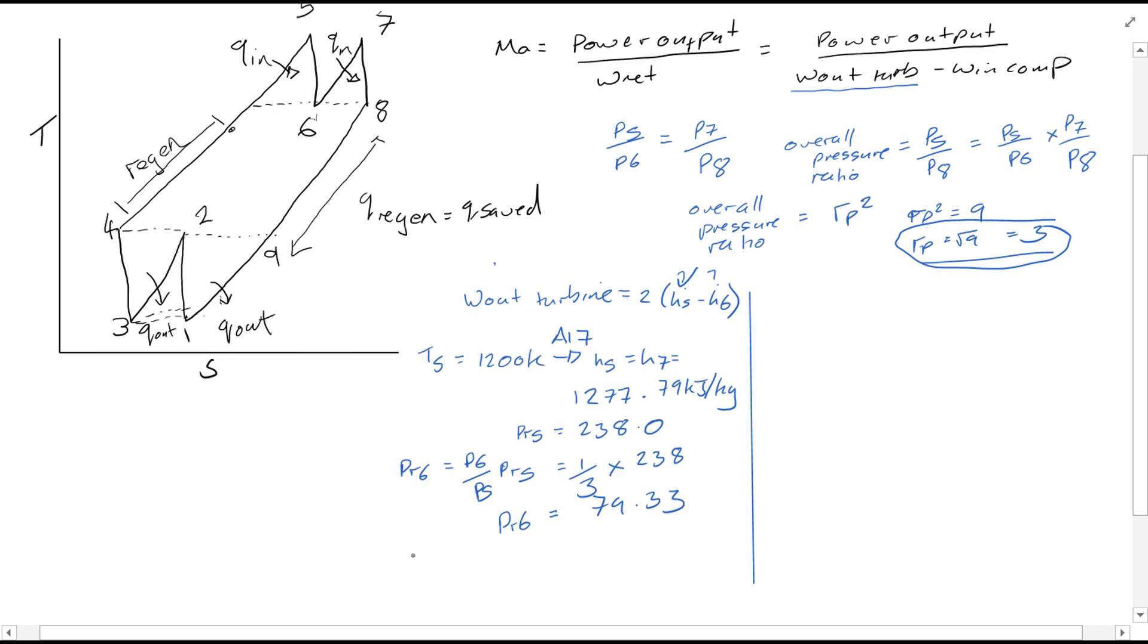Interpolating now to find h6, you will find h6 is equal to h8 as well, looking at the diagram, and that value is 946.36 kJ per kg. So then it is simply subbing in these values into the equation. You will find that W out is equal to, since there are two turbines, 2 times (1277.79 minus 946.36), and that will give you a value of 662.86 kJ per kg for the work out.